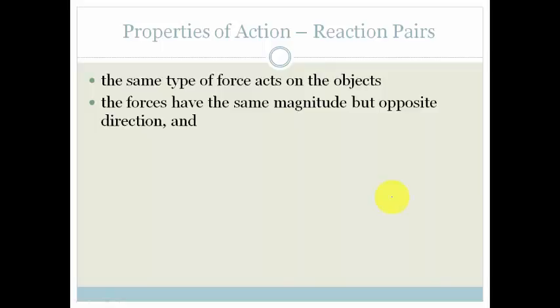Secondly, the forces have to be the same magnitude. In other words, they have to be the same size. And they're always opposite in direction. And most importantly, the forces act on different objects. It's not two forces acting on one object. The forces are acting on different objects. And that's the most important thing about action-reaction pairs and how to identify them.